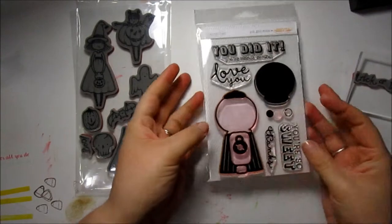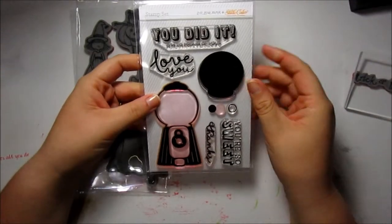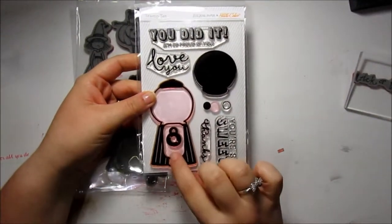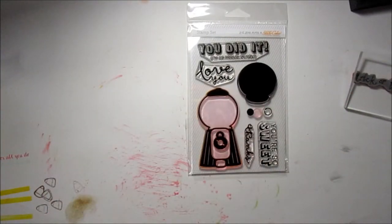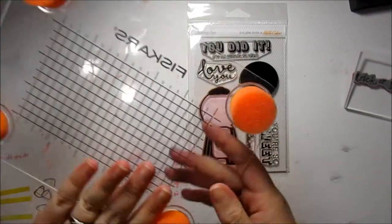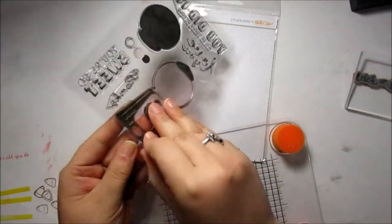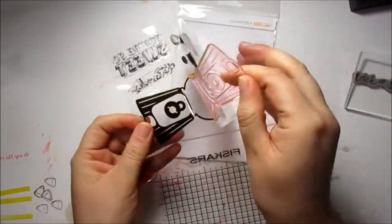I'm also going to be using the stamp set from the Studio Calico card kit. I'm going to be using the gumball machine. I'm a really big fan of stretching your stamps and using them in ways that they weren't intended to be used, so we're going to start off using the gumball machine stamp.